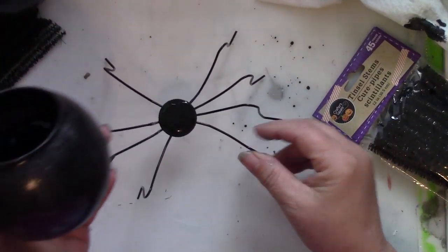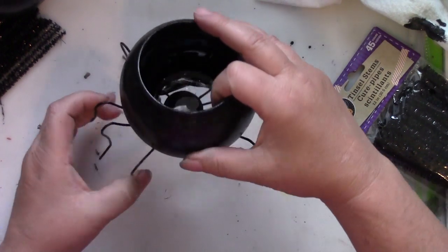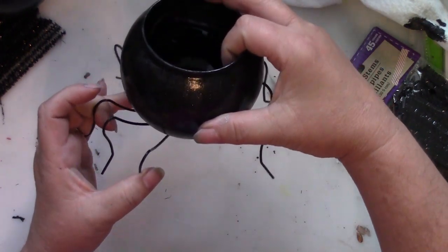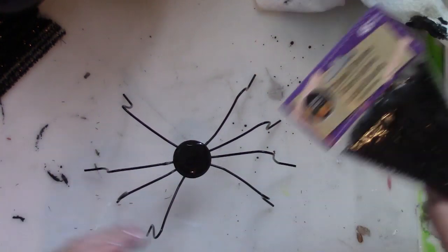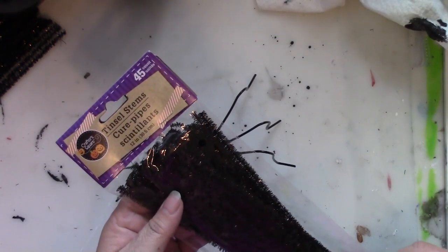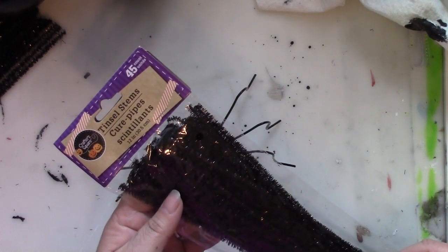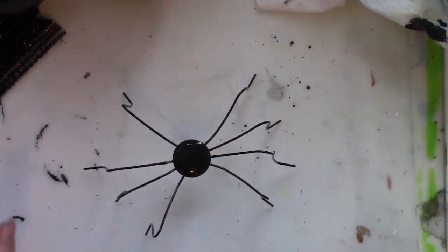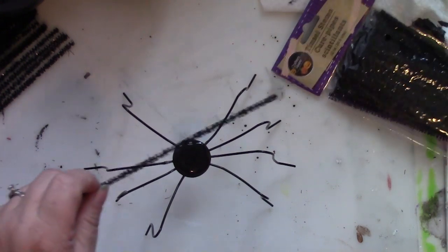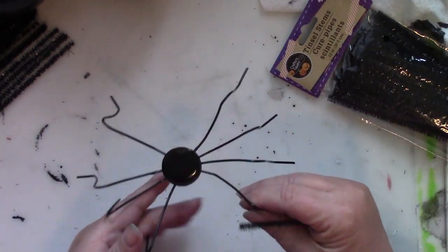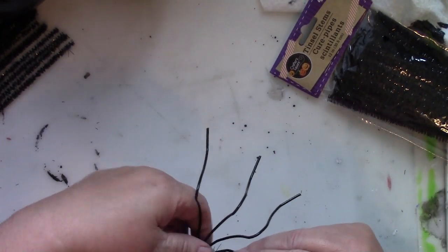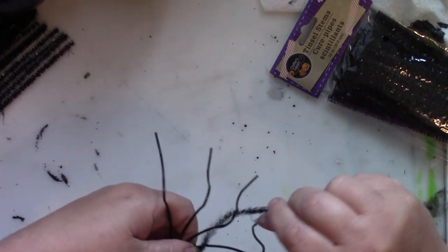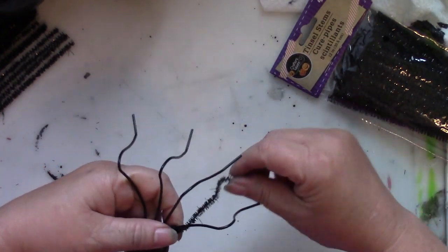So I decided that since this bowl is so big that the legs were just a little bit skinny and they needed to appear fatter. So I'm going to take some of the chenille wires from Dollar Tree of the black. And what I like about them is that they have sparkle in them. And I'm going to use two per leg and I'm simply going to wrap them around and make the legs have a little bit more substance.